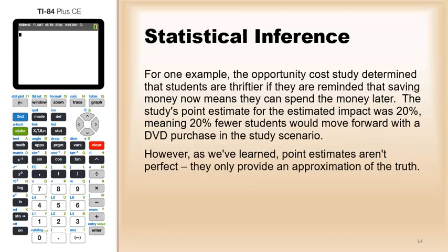For one example, the opportunity cost study determined that students are thriftier if they are reminded that saving money now means they could spend it later. The study's point estimate for the estimated impact was 20%, meaning 20% fewer students would move forward with a DVD purchase in the study scenario.